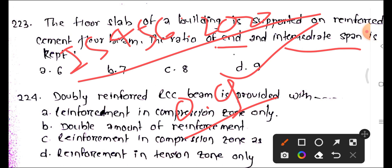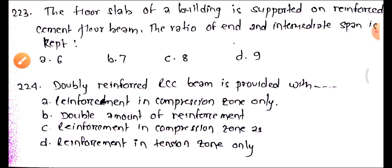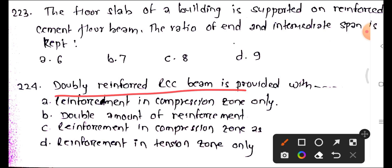Question 224: A doubly reinforced RCC beam is provided with reinforcement in both tension and compression zones. The reinforcement in compression zone generally requires a double amount of reinforcement. The reinforcement in the compression zone is one of the key features of a doubly reinforced RCC beam.